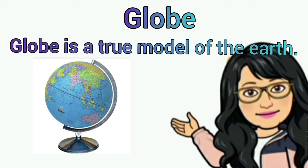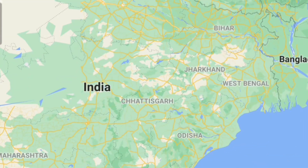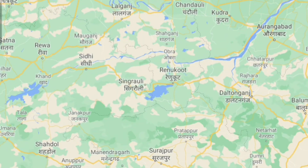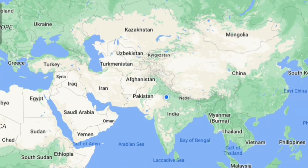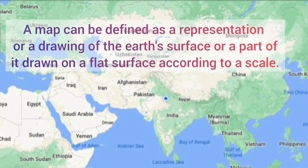A globe is a true model of the earth. It is useful when we want to study the earth as a whole. But when we want to study only a part of the earth — such as our country, state, district, towns and villages — it is of little help. For that purpose we use maps. A map can be defined as a representation or a drawing of the earth's surface, or a part of it, drawn on a flat surface according to a scale.